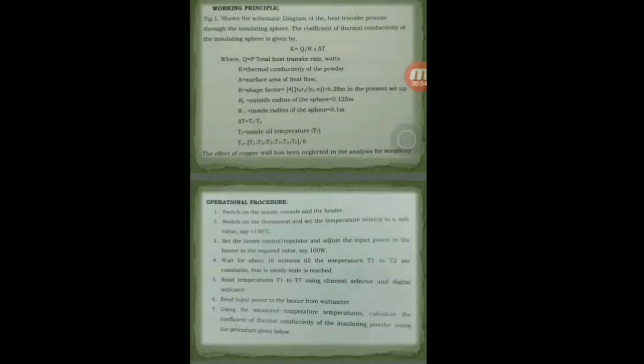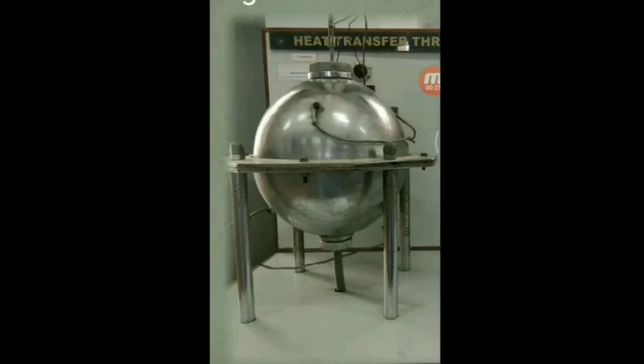In the determination of the thermal conductivity of the insulating material, the next step to be followed is the working principle. In the working principle, the schematic diagram of the heat transfer process through the insulating sphere is shown. This consists of two surfaces, inside and outside surfaces, on which different thermocouples are mounted to find the temperatures inside and outside the surface. A heater is connected which is penetrated into the surfaces, and the electrical energy is supplied so that it converts into heat energy and the temperatures are obtained in the digital temperature indicator.